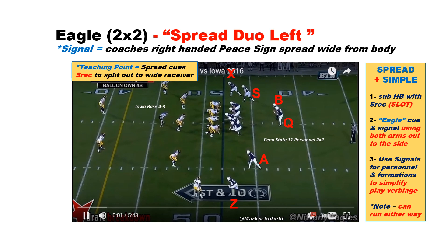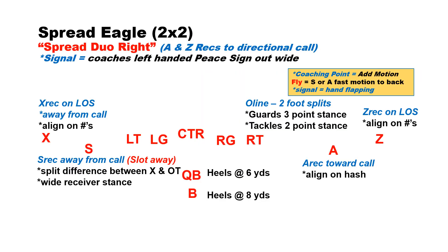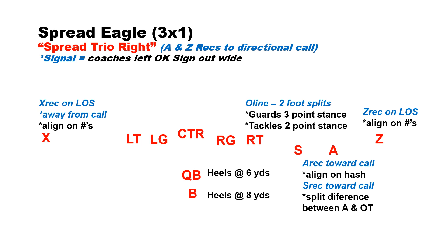You can see now we can run this both ways because essentially we've got two slot receivers to each side. Here's the two by two, and then here's spread trio right, three by one.